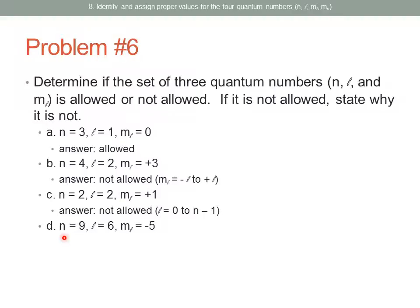For N=9, L=6, M_sub_L=negative 5: at first glance you might think N=9 is too big, but there is no upper limit on N. So N=9 is fine. If N=9, L can be 0 up to 8, so L=6 is allowed. M_sub_L=negative 5 is also valid if L=6. Even though this is a set of quantum numbers we would not see in practice, it follows all the rules — it is allowed.